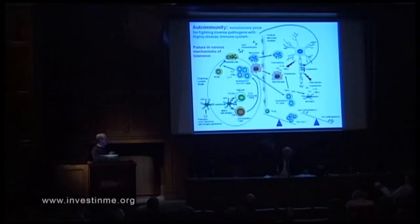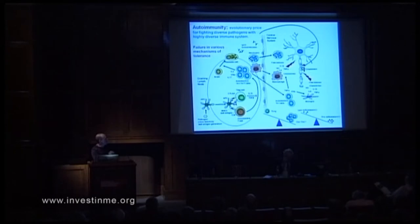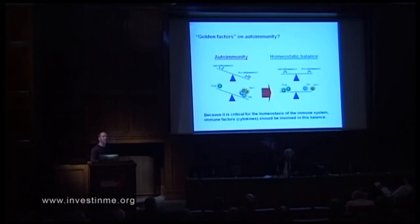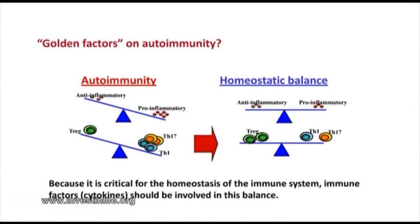In all autoimmune diseases, there is an imbalance between Th1 and Th17 cells against regulatory cells — a pro-inflammatory environment versus an anti-inflammatory environment. What we are looking for in the immunology field is simply to shift this situation of autoimmunity back to homeostatic balance. We are not trying to completely reverse the effect; we only want to restore balance. So we are looking for this golden factor in autoimmunity.